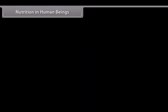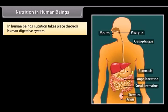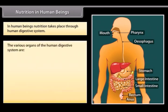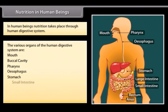In human beings, nutrition takes place through the human digestive system. The various organs of the human digestive system are mouth, buccal cavity, pharynx, esophagus, stomach, small intestine, large intestine, rectum, and anus.